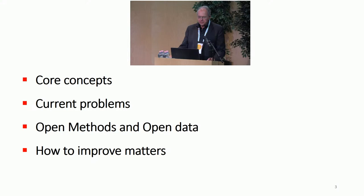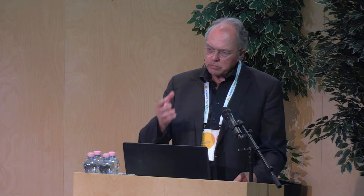Then I'll talk about open methods and open data — two corners of open science which are quite well known nowadays and can help us improve research integrity. That will be the core of my argumentation. Then I'll move on to some other methods to improve research integrity and research quality, because research integrity is about research quality. I'll end with a few slides announcing the world conference.